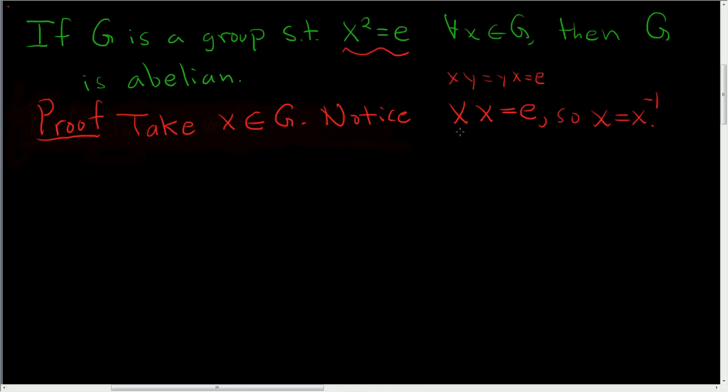If you prefer a more formulaic approach, you can multiply both sides by the inverse and show that x is its own inverse. In any case, let's show it's abelian.